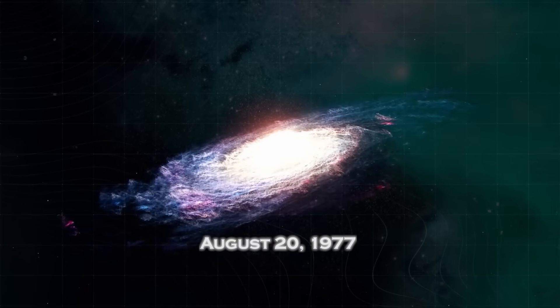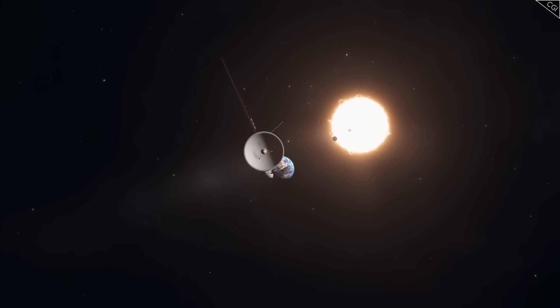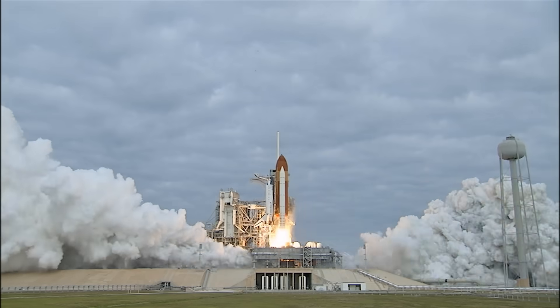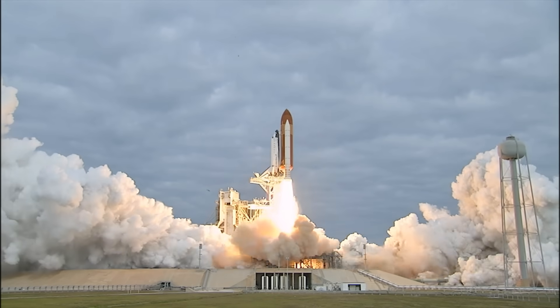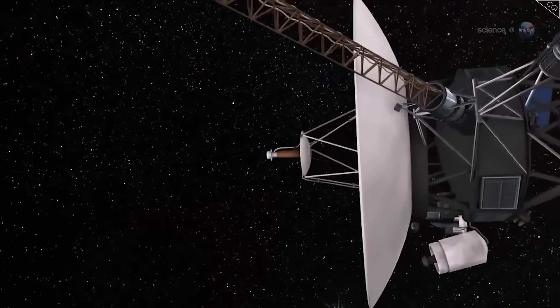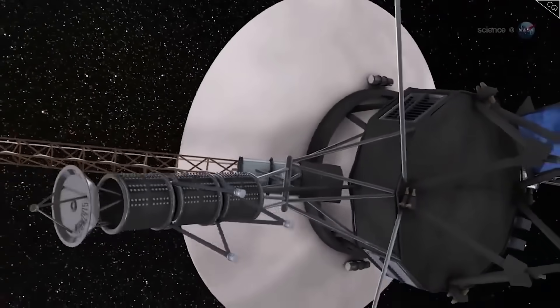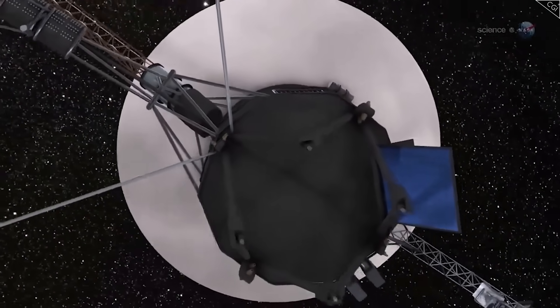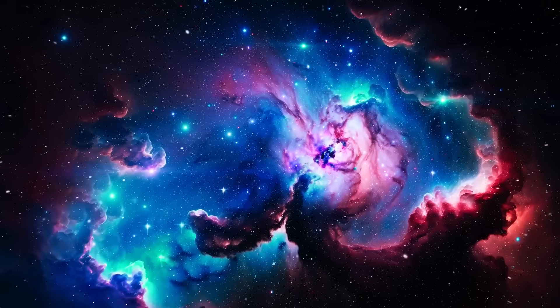It all began in 1977, when Voyager 1 and its twin, Voyager 2, were launched to ride a once-in-a-lifetime alignment of the outer planets. With less memory than a digital watch and power equivalent to a refrigerator light bulb, these probes were never meant to survive half a century. Yet somehow, they did.